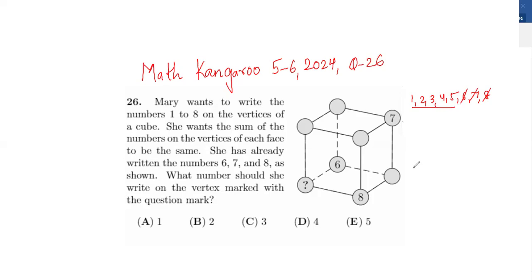The other condition is that the sum of the numbers on each of the vertices has to be the same, and we need to find what number will come at the question mark. Now, whenever they talk about these questions, most students get stuck as to where to start.